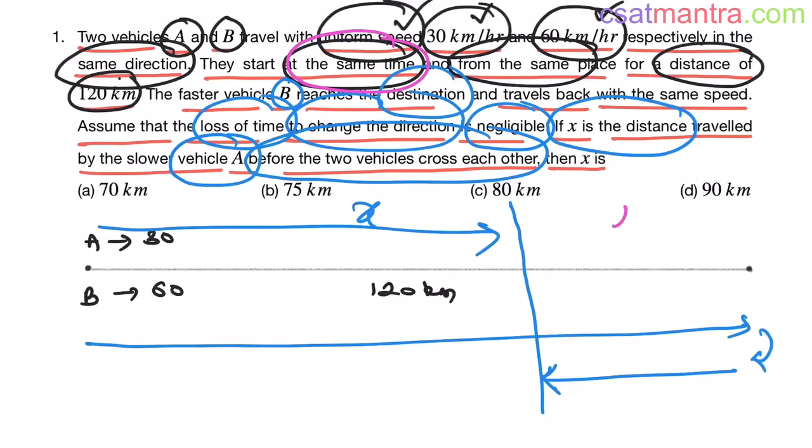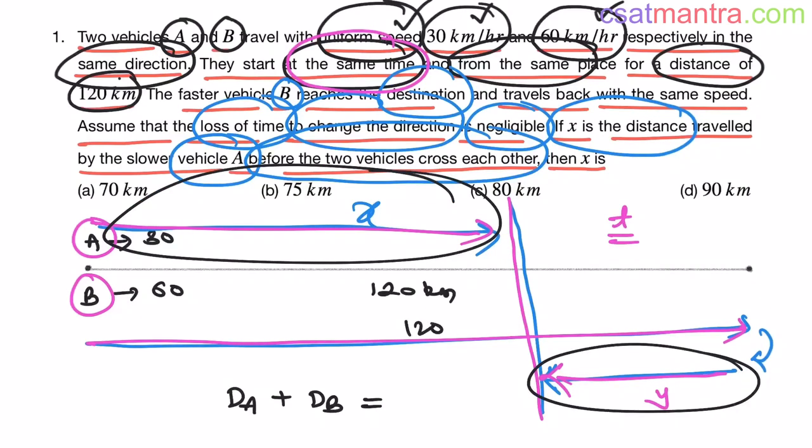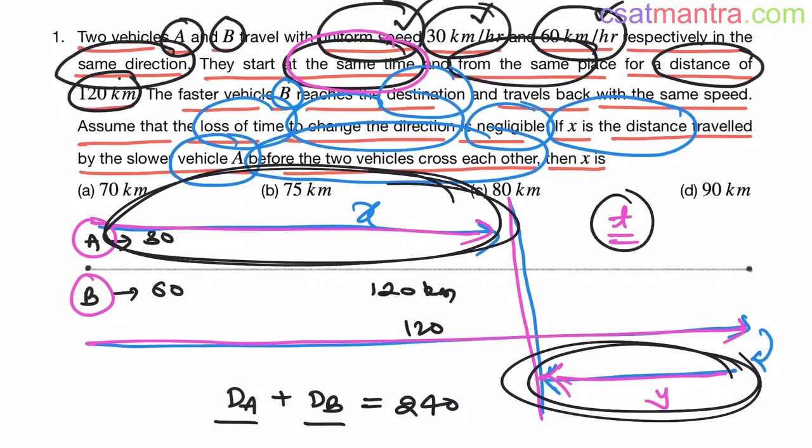So in this time A has traveled the distance X my friends. They both have started at the same time. After some time T, they are crossing each other. Now in this T time, what is the distance traveled by vehicle A and vehicle B? Distance traveled by vehicle A plus distance traveled by vehicle B. A has traveled X distance. B has traveled this distance. This is 120 plus this distance my friends. I am calling it as Y. Now isn't X plus Y equal to 120. So this is 120 and these two distances sum up to 120. So 120 plus 120 that is 240 kilometers my friends.